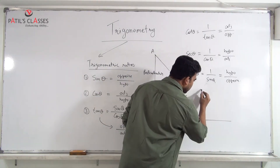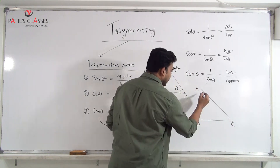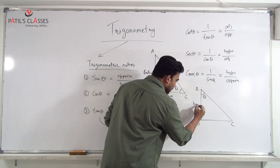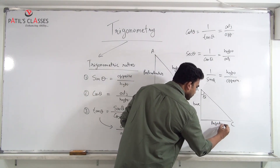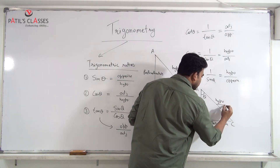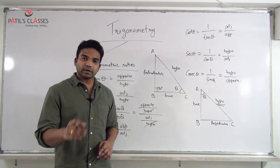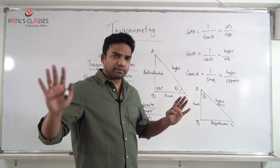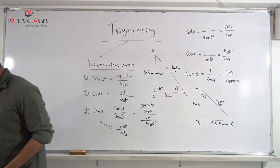Let me draw this: in triangle ABC, if theta is now at angle A, then the side touching theta becomes the base, and the side opposite theta becomes the perpendicular. The hypotenuse does not change — it remains the side opposite to the 90° angle. Let me now teach you the best way to remember sin θ, cos θ, and tan θ.